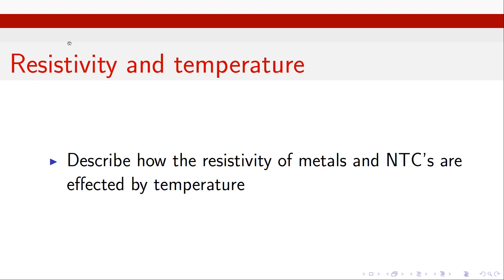In a previous video we've had a look at resistivity, defined what it is, and looked at an equation linking it with resistance. But just as with Ohm's law, which holds at a constant temperature, the equation for resistivity also holds only at a constant temperature. Because at different temperatures the resistivity of a given material is going to change. So here we're going to look at what effect temperature has on different types of materials, and how we can approximate those for relatively small temperature changes.